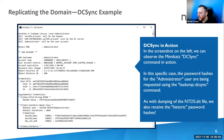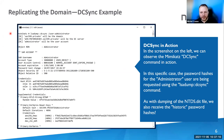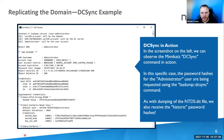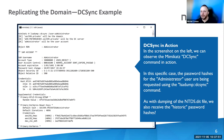DC Sync is fairly simple to execute. There is one command: lsadump::dcsync /user:administrator. All the information in your Active Directory NTDS database will be synced to your terminal. You can see the NTLM hash, the AES hashes, and even the previous password hash for the administrator user. This DC Sync attack gives you all the information located within your NTDS database.